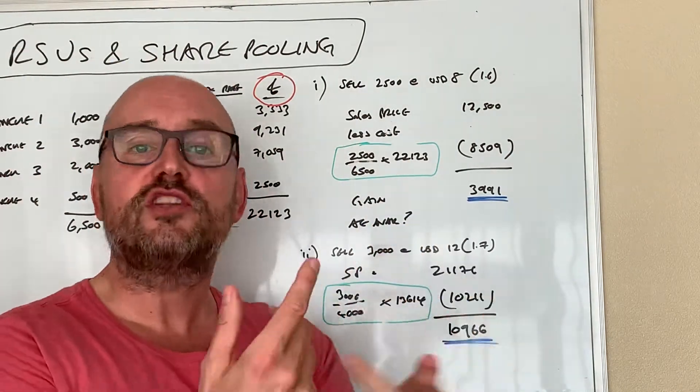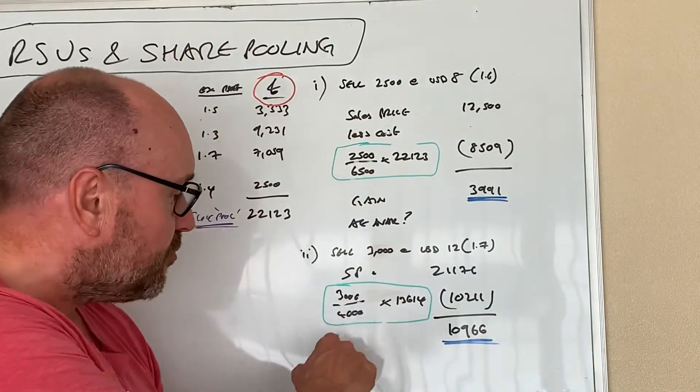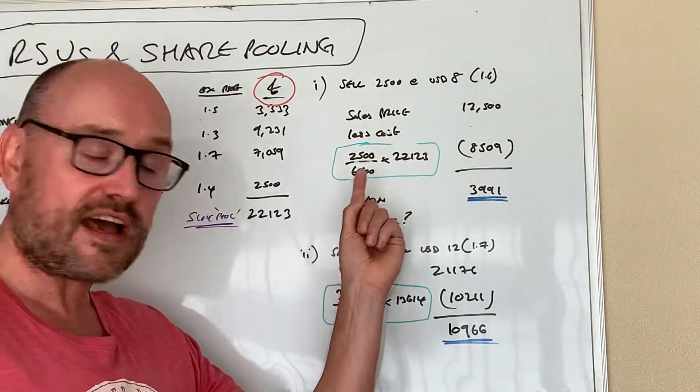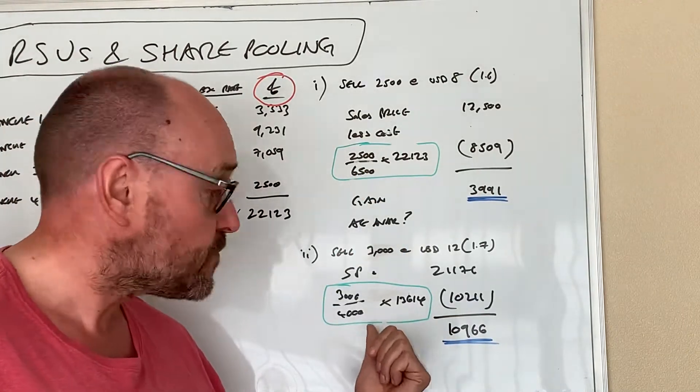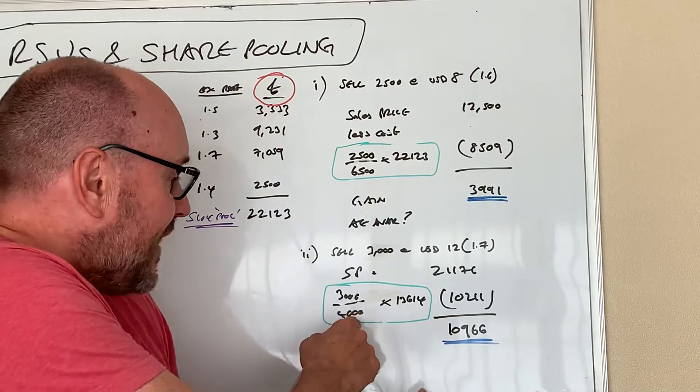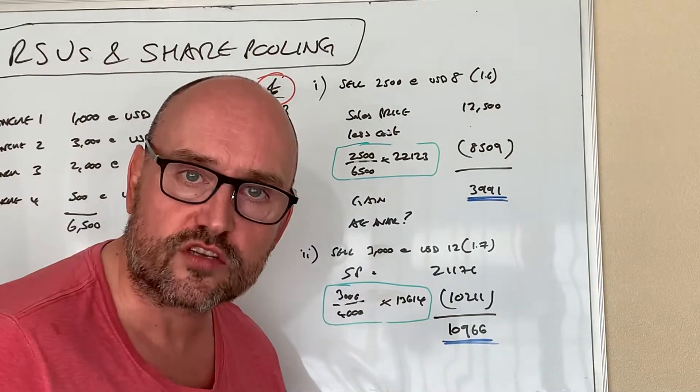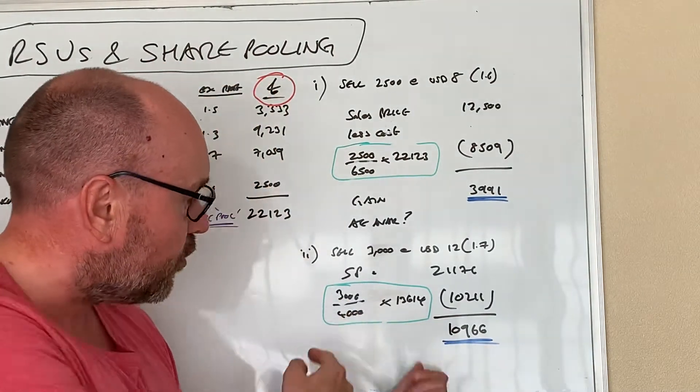Because remember in this previous example he had six and a half thousand, but once he sold two and a half, he's left with four. So the denominator on the fraction, the bottom bit, changes from six thousand five hundred to four thousand.